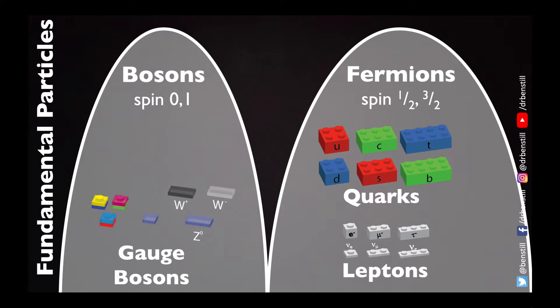There is also an additional boson which is not a force carrier that is part of this fundamental building block set, and that is the Higgs boson. Interaction with the Higgs is not like interaction with the other bosons — it does not convey a force, but instead imparts a mass to the particles it interacts with.